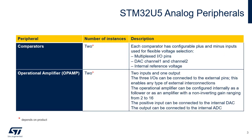Comparators can be used for a variety of functions including wake-up from low power mode triggered by an analog signal, analog signal conditioning, and cycle-by-cycle current control loop when combined with a PWM output from a timer. Comparator inputs can be internally connected to the DAC channels.